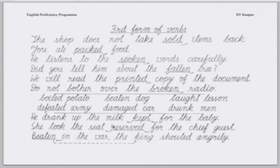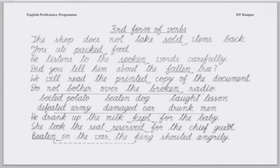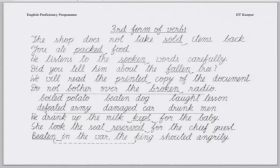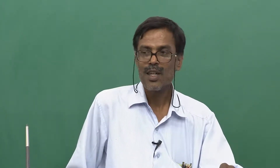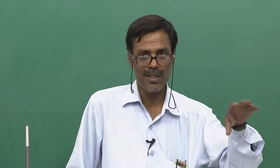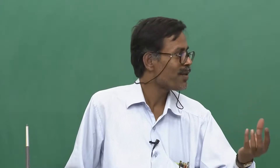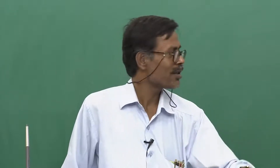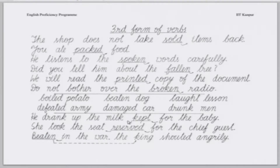Similarly: 'She took the seat reserved for the chief guest.' If the phrase 'for the chief guest' were not there, you would say 'she took the reserved seat' — with 'reserved' in its ordinary place before the noun. But when you want to connect 'reserved' with the phrase 'for the chief guest,' you must keep 'reserved' after 'seat' to make space for that phrase. This is how adjective and noun exchange their places in such situations.